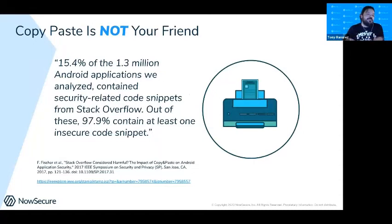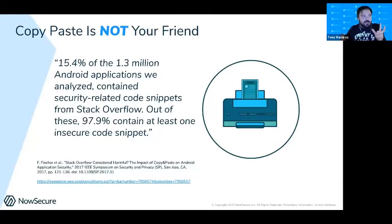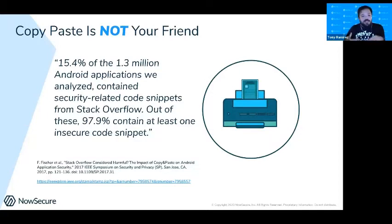That tells you the maturity still isn't there — there's a lot of bad code. And these were Android apps on the app store, not some random apps. When we do analysis on all the apps we test — roughly 10,000 apps per week — we found about 85% have at least one security flaw.